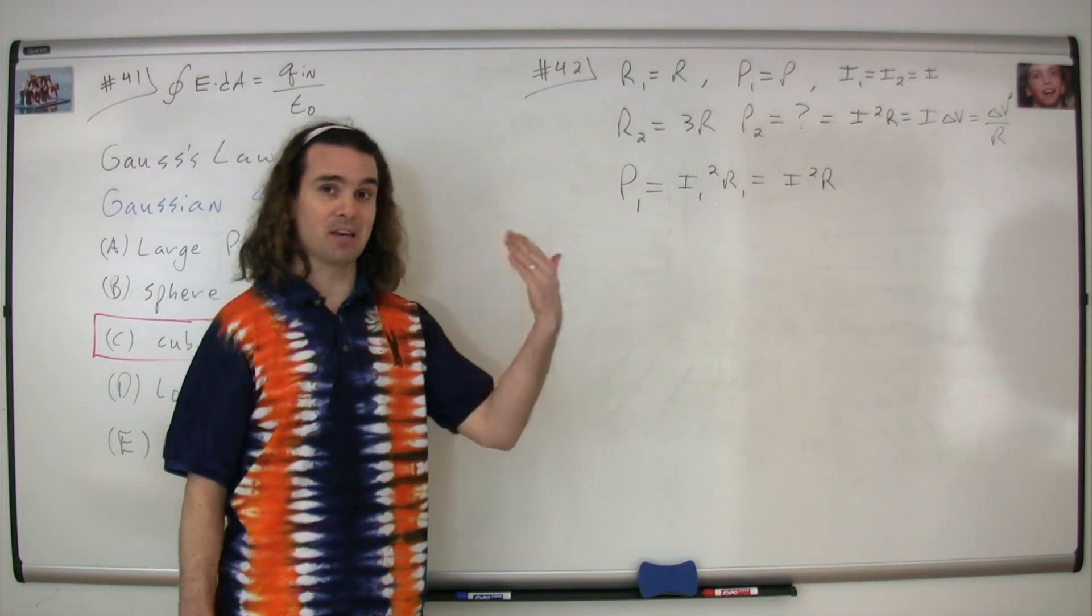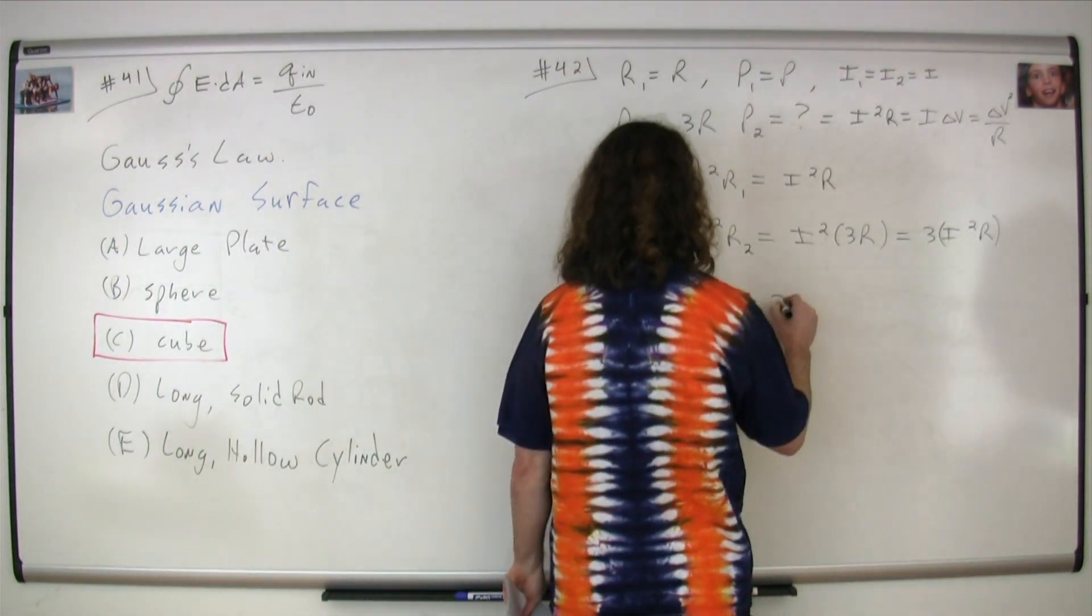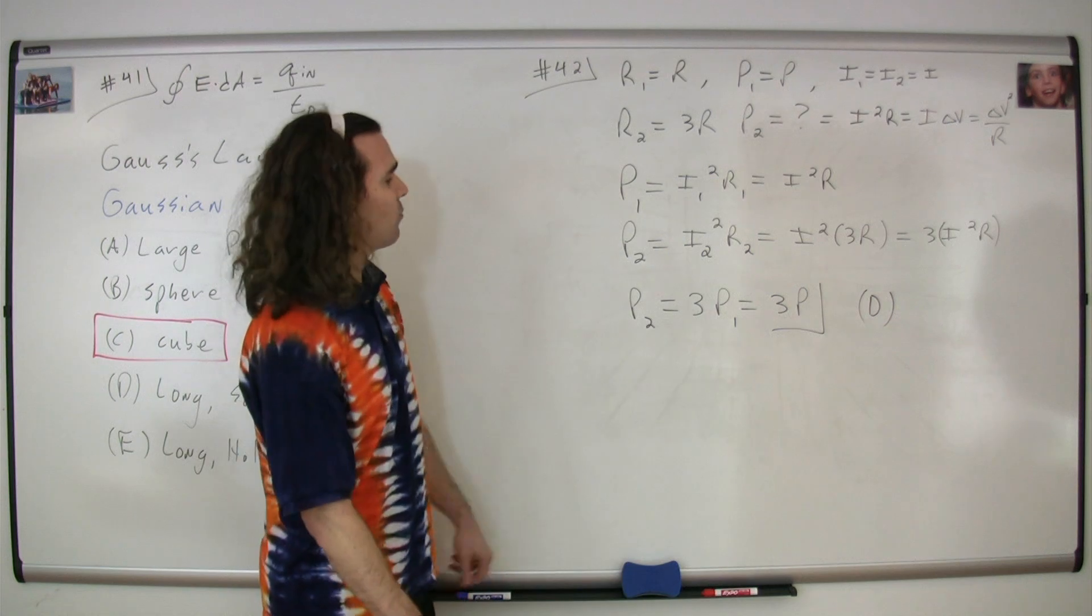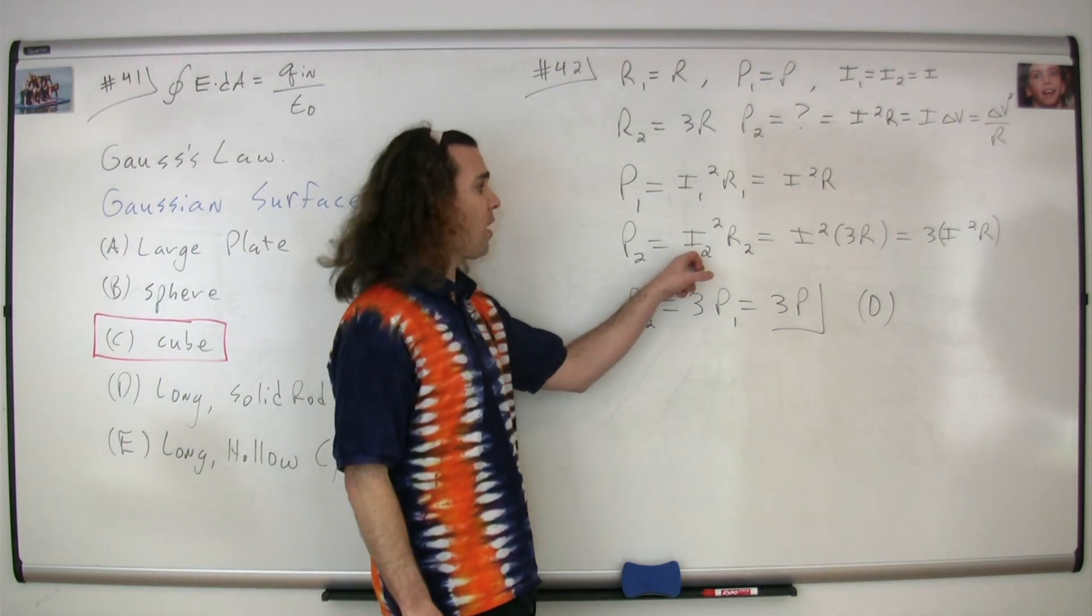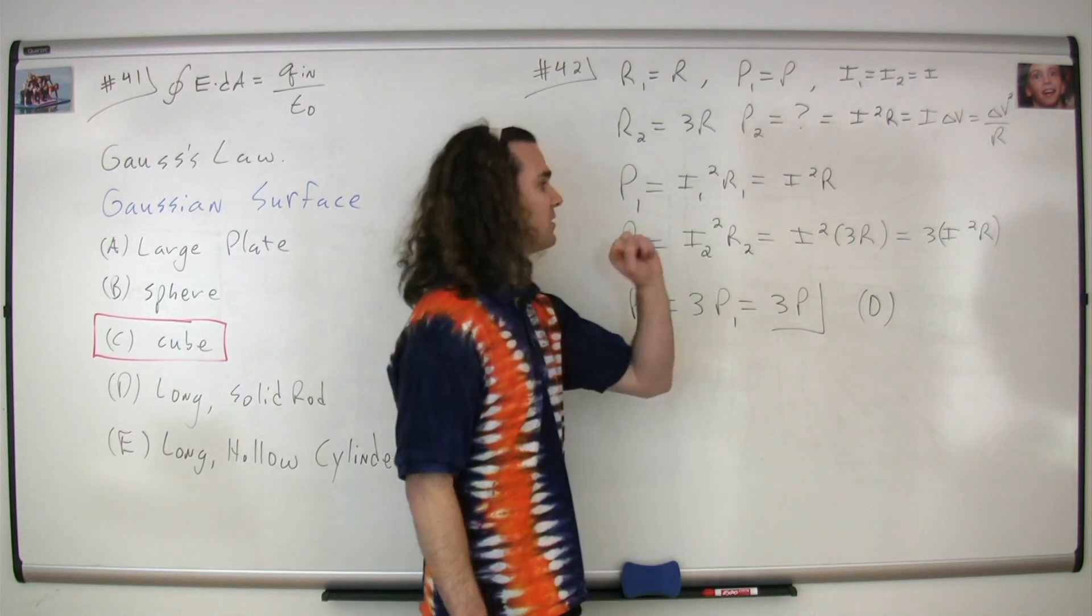Now we need the power dissipated by the second wire. The power dissipated by the second wire is the current through the second wire squared times the resistance of the second wire, or current squared times 3R in this case.